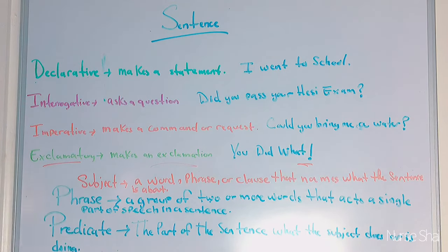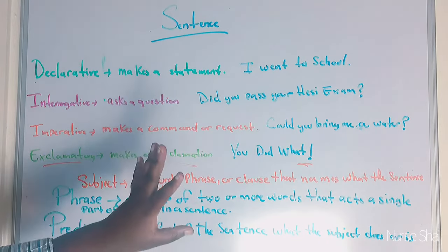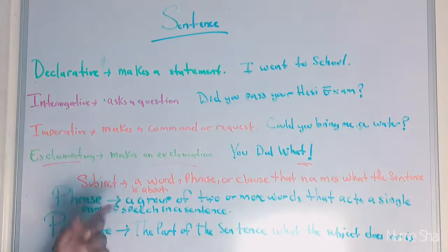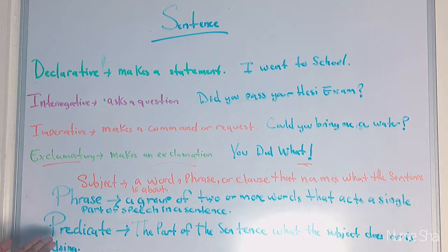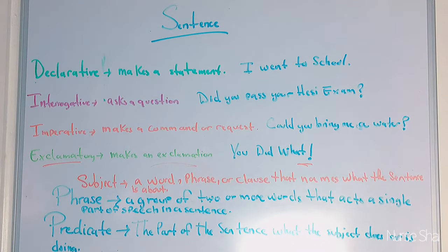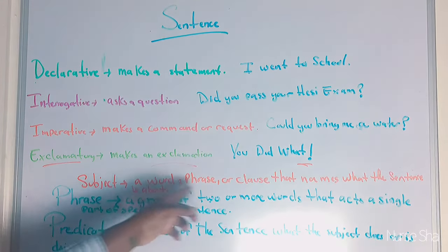A subject is a word, phrase, or clause that names what the sentence is talking about. For example, 'Jane went to the store' — the subject is Jane because we're talking about Jane. A phrase is a group of two or more words that acts as a single part of speech in the sentence. A predicate is what the subject does or is doing — in 'Jane went to the store,' the predicate is 'went to the store.' The subject is the main topic of a sentence.